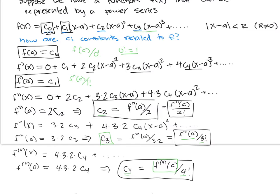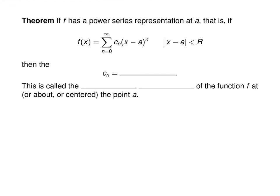So we have proven the following theorem: if a function f has a power series representation at a number a, then the coefficients cn are equal to the nth derivative at a over n factorial. This is called the Taylor series of the function f at — or centered about — the point a. These all mean the same thing.